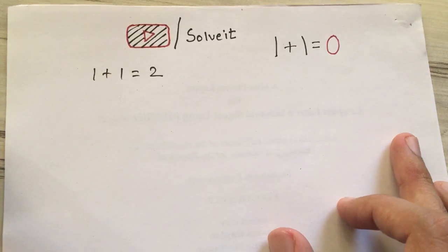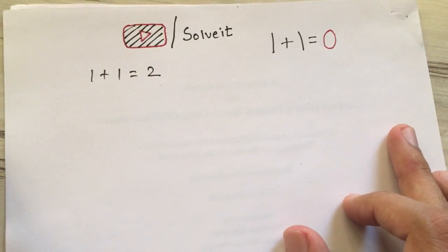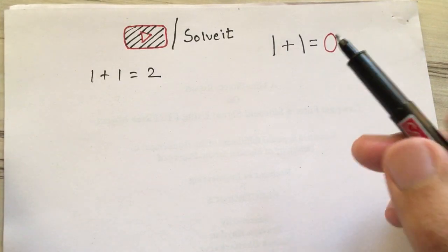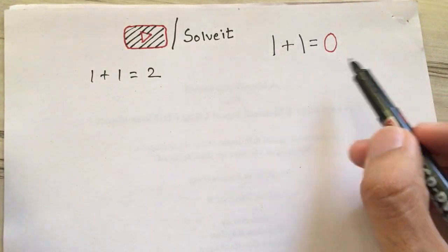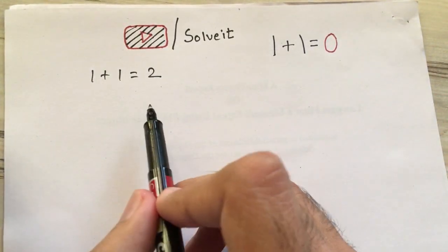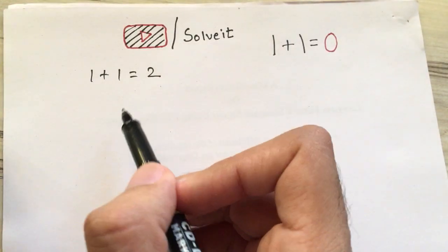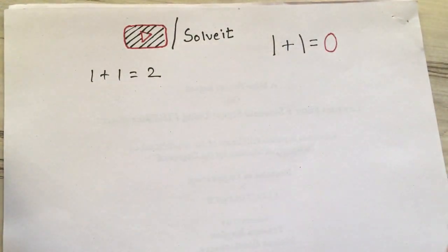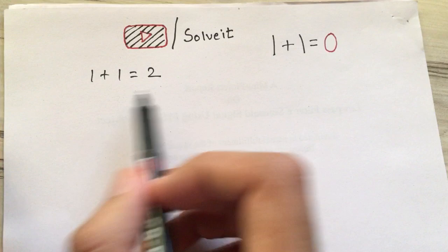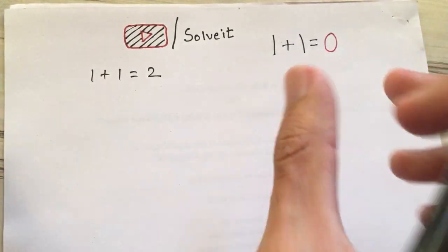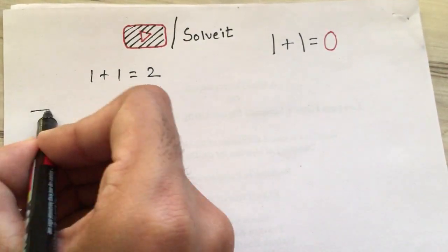Hello guys, welcome to Solve It! We are back again with another video. In this video we'll be proving how 1+1 equals 0 and not 2. This is a universal law that 1+1 equals 2 and not 0, so let's get started. How can we prove this as true?